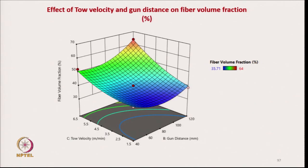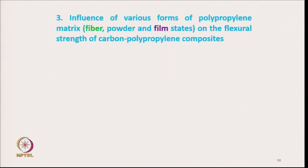Similarly, the response surface showing the effect of tow velocity and gun distance on fiber volume fraction shows that as gun distance increases, the fiber volume fraction changes accordingly. We can optimize the parameters depending on our use. So what we have seen in the experimental setup is how to optimize the parameters and the different factors which affect the resin content.